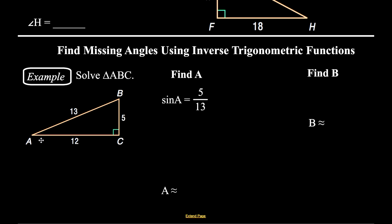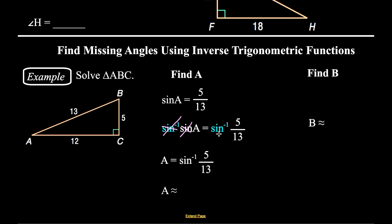For angle A, I can use any of the trig functions. I'm going to randomly choose to find the sine of angle A. Sine equals opposite over hypotenuse, so it's 5 over 13. To get rid of the sine algebraically, I take the inverse sine of both sides. The inverse sine and the sine function are inverse operations and they cancel out, leaving A equal to the inverse sine of 5/13.